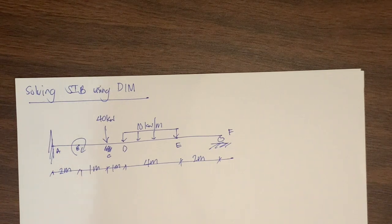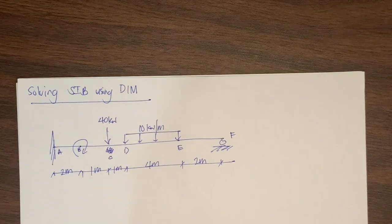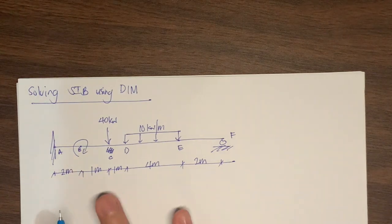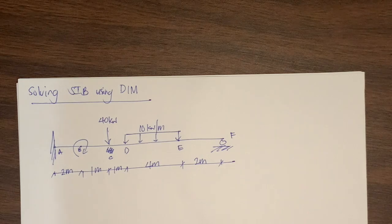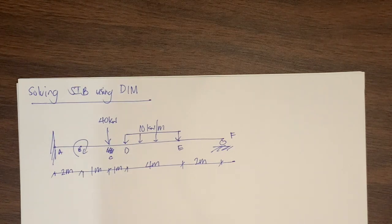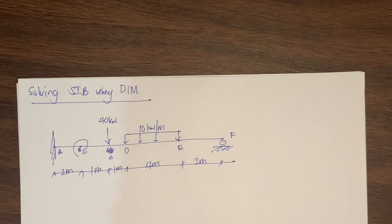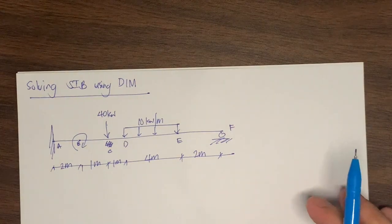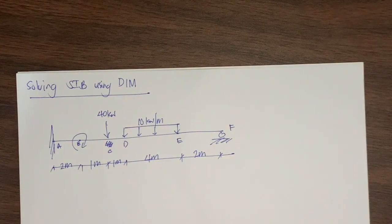Since we have already discussed the concept of the double integration method and its requirements for this type of geometric method on structural beams, let's first check if this is indeed a statically indeterminate beam. We have a propped beam 10 meters long with a fixed support at the leftmost part at point A and a roller support at point F. We have four unknown reactions and one member, giving us four minus three times one equals one — a statically indeterminate beam to the first degree.